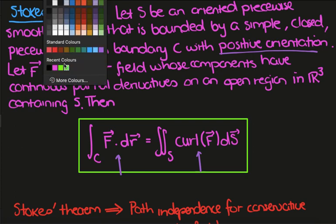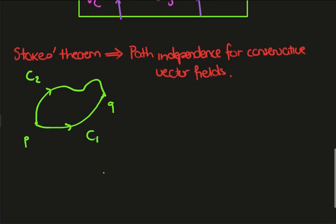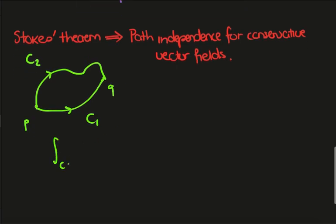So let's see how we would do that. So let's say we have, like in the picture before, we have two points, P and Q. And I've got two paths between them, so we'll call this C2 and we'll call this C1. And we want to show that the integral of F